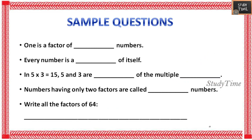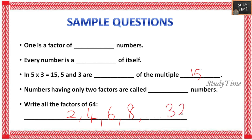Sample questions: 1 is a factor of all numbers. Every number is a factor of itself. In 5 × 3 = 15, 5 and 3 are the factors of the multiple 15. Numbers having only 2 factors are called prime numbers. Write all the factors of 64: 2, 4, 8, 32, and the remaining factors of 64.